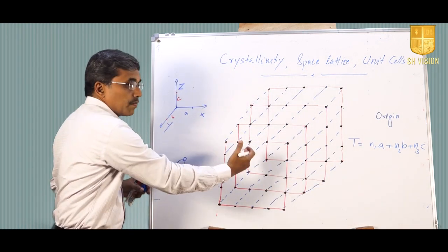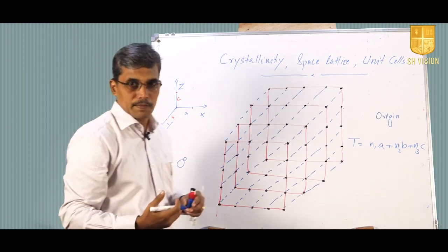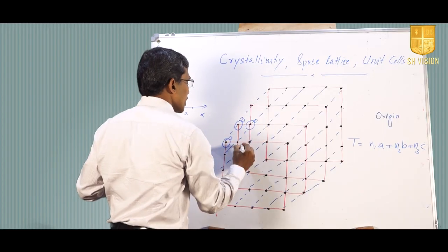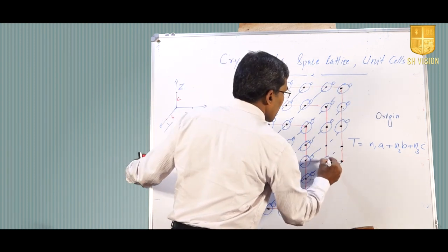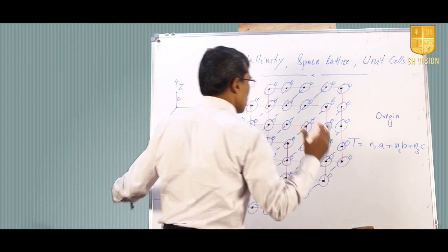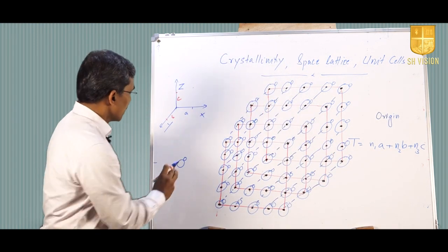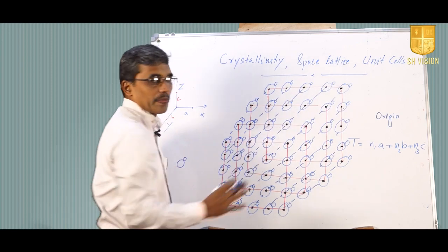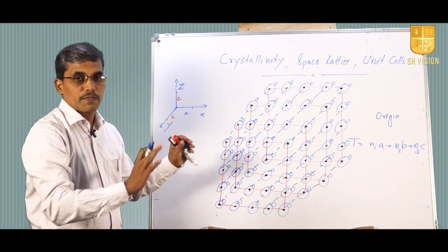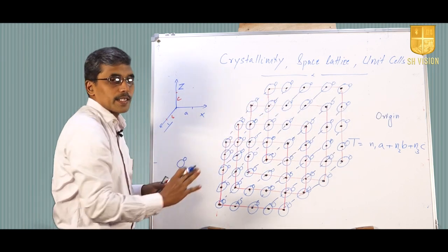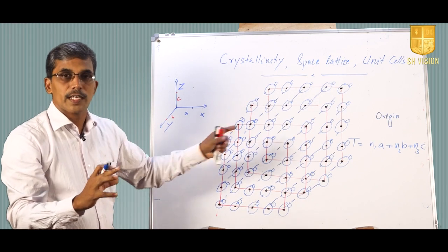Now, if to this space lattice we attach a basis — a basis means an atom or a group of atoms or ions having identical orientation, identical structure and nature — then this basic unit, when attached to the imaginary framework of the space lattice, gives us a crystal. So: space lattice (framework) plus basis gives you crystal. This crystal will have a peculiar pattern of atoms or molecules arranged in a regular pattern, and it will exhibit its properties accordingly.